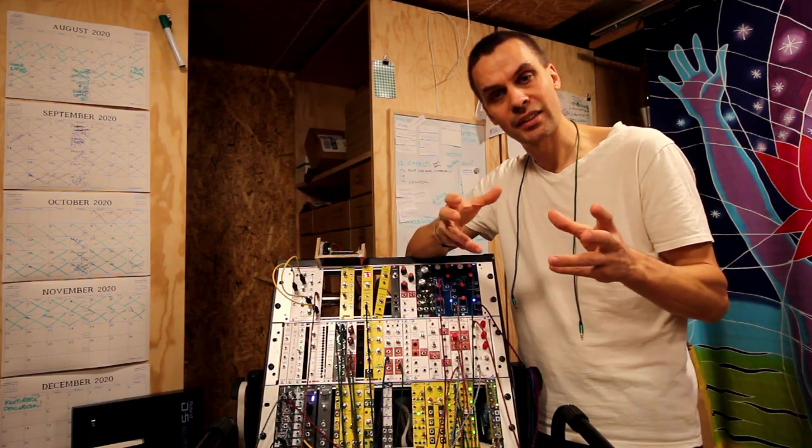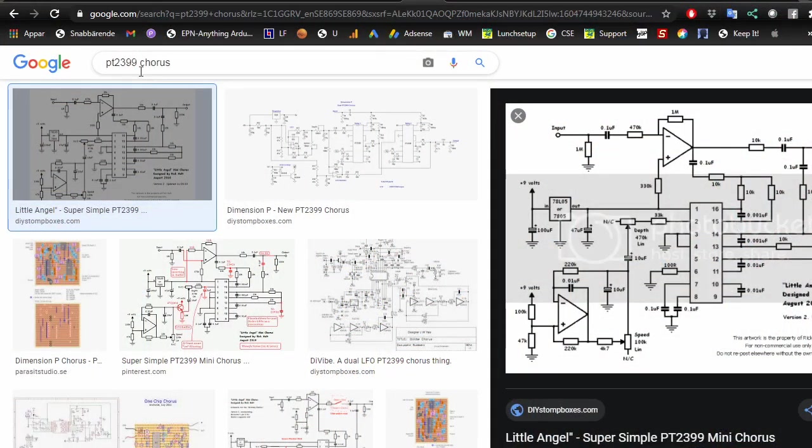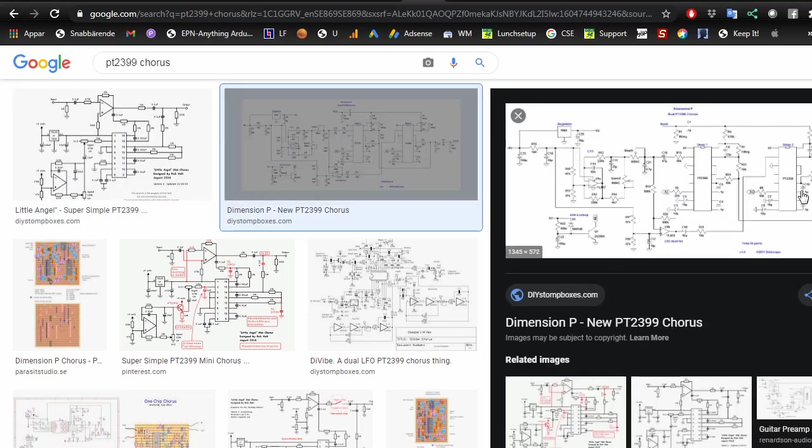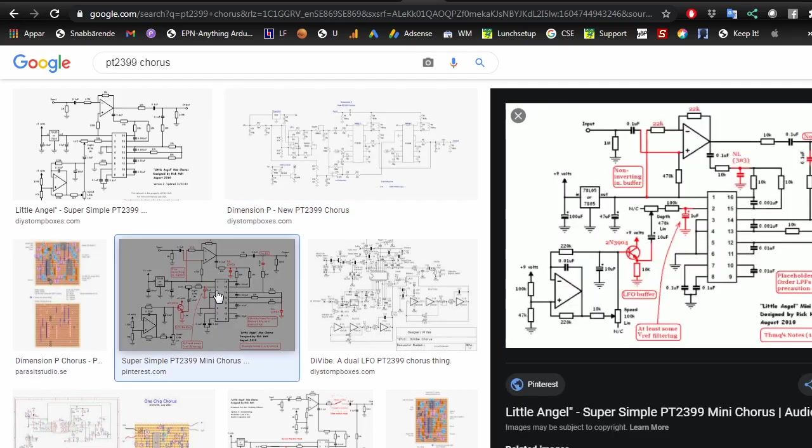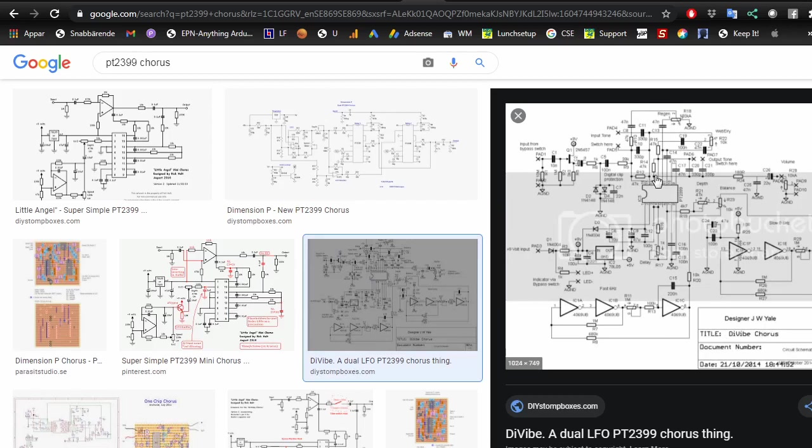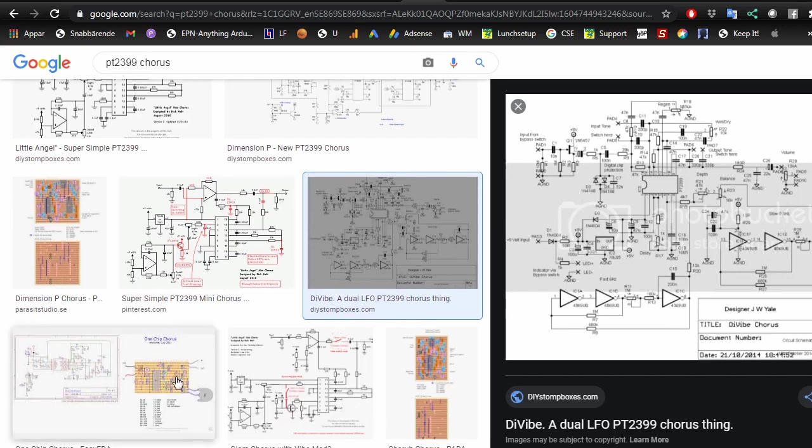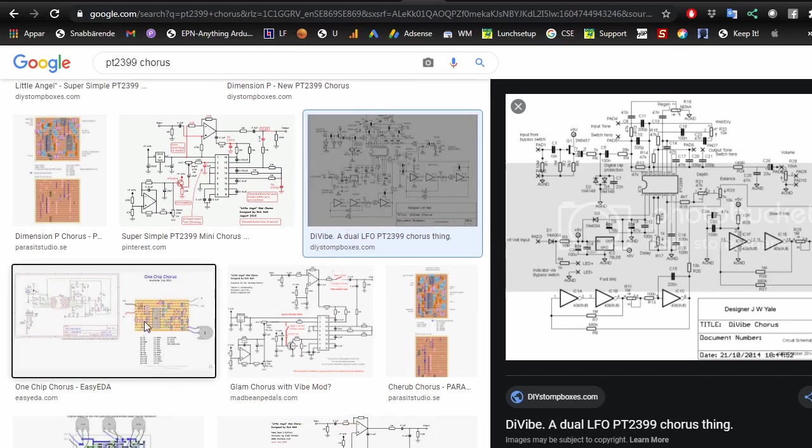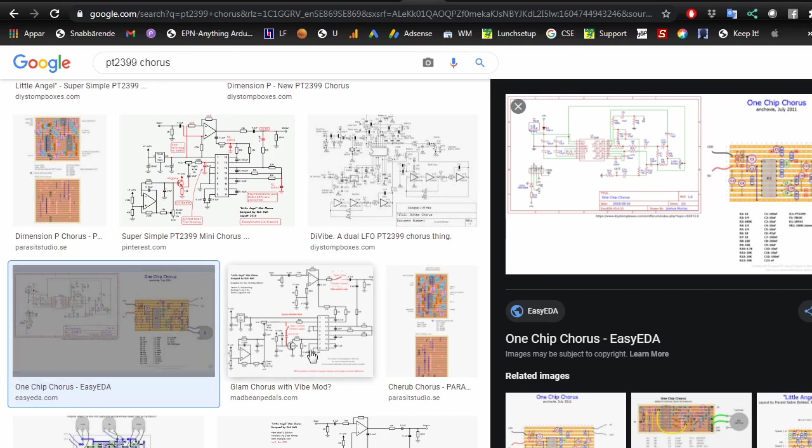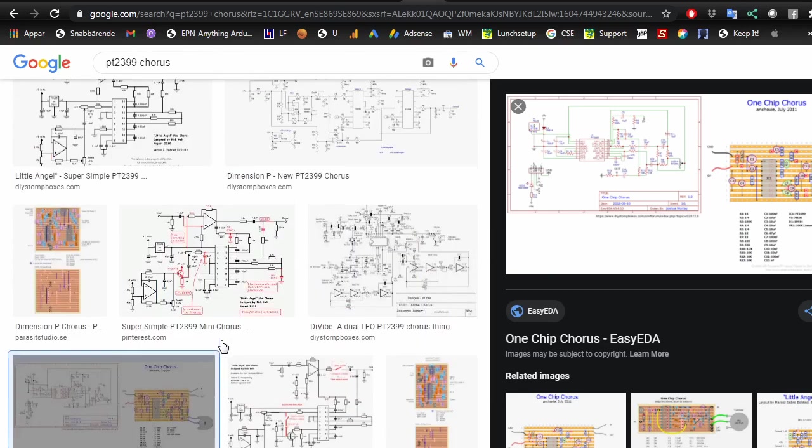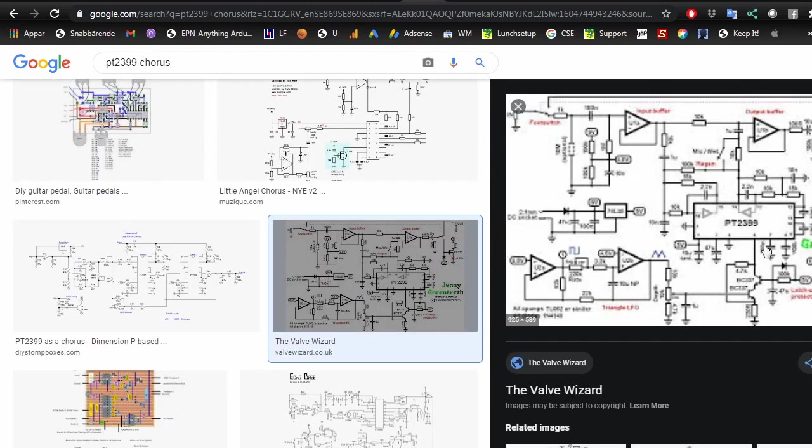Let's go and look at which schematics to use and how to build it. Doing a search on Google for PT2399 chorus gives you a bunch of different ones. It starts with the Little Angel, a one PT2399 chorus, the Dimension P which uses two of them. There's lots of options, but those two seem to be the biggest, most used, at least they come up first in my search.